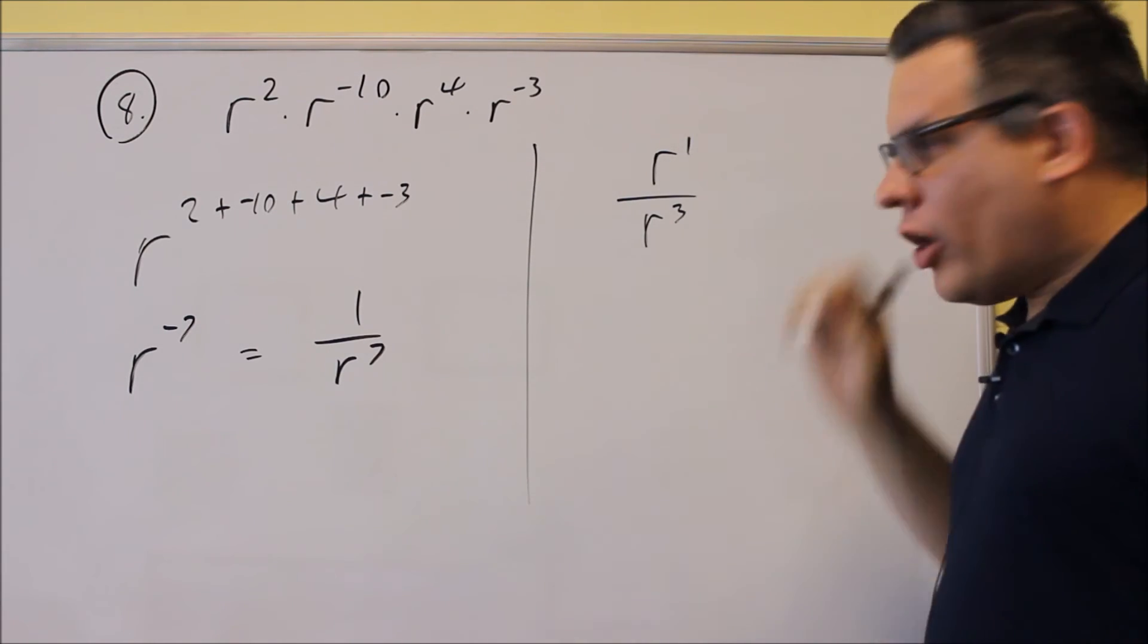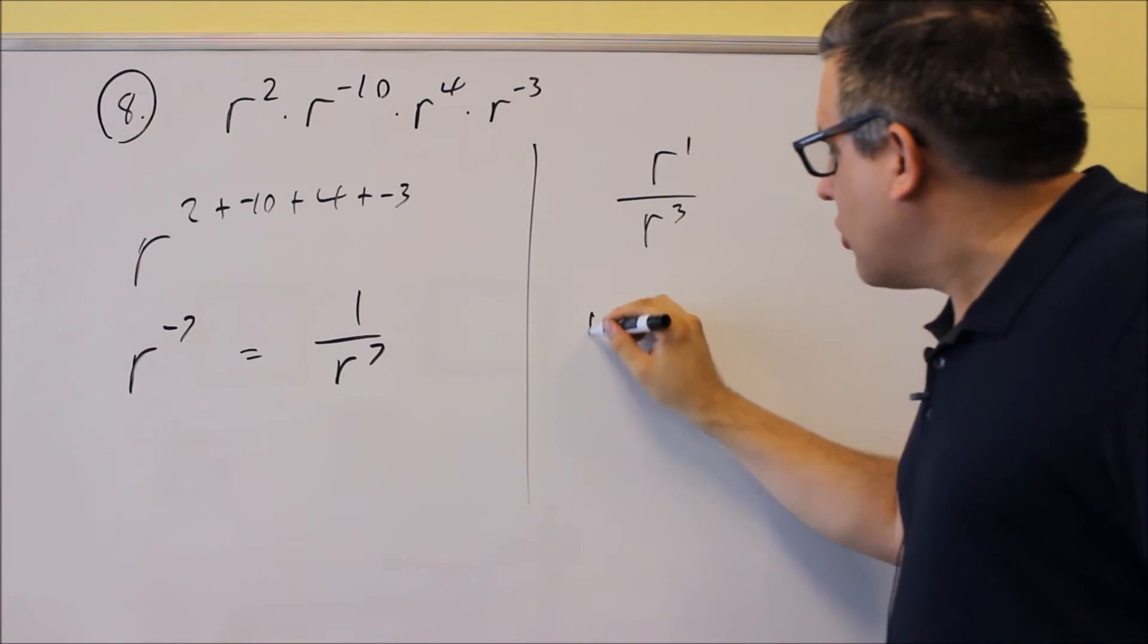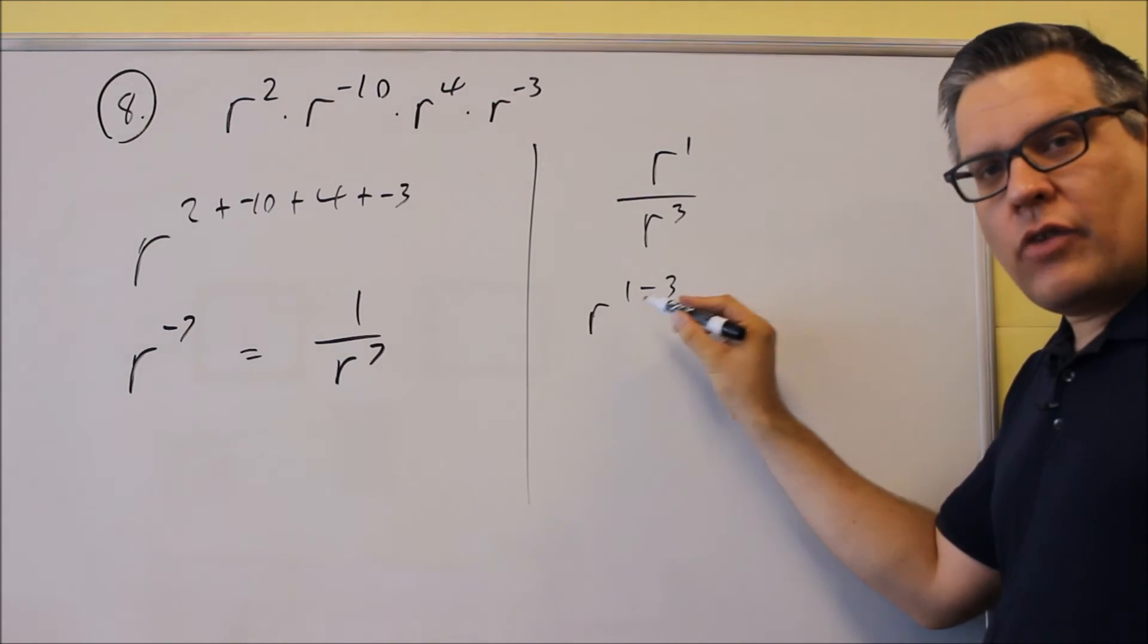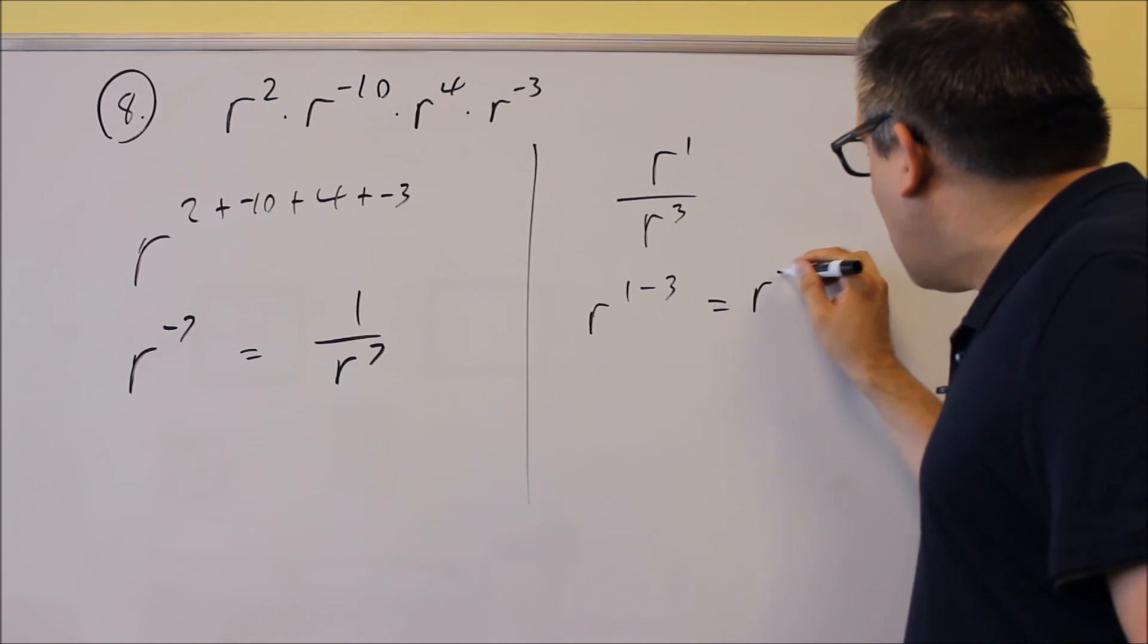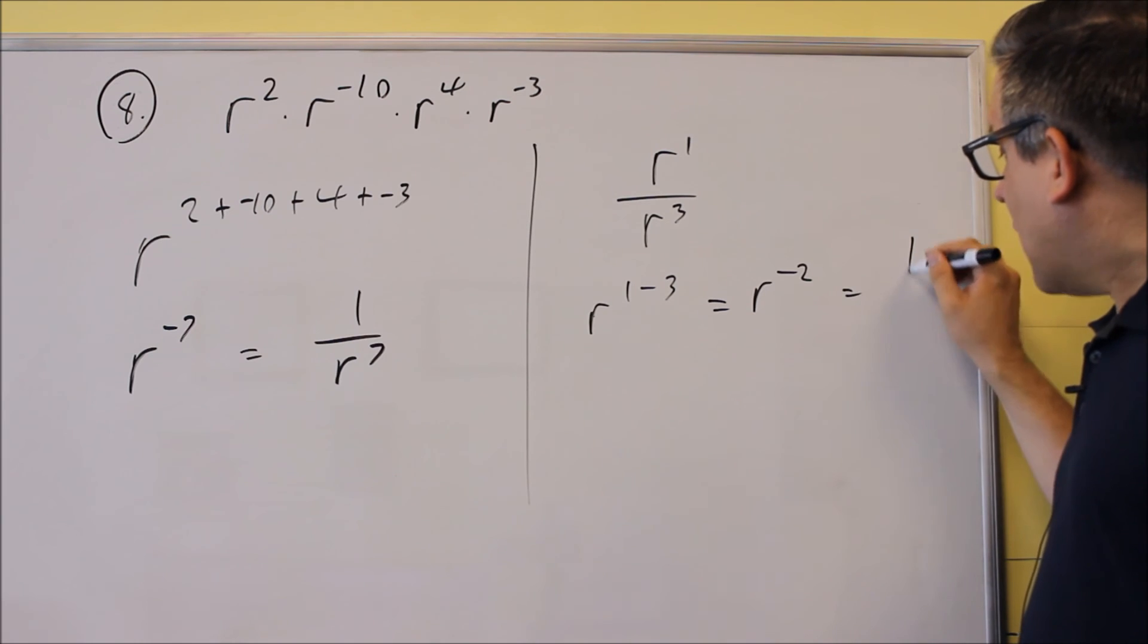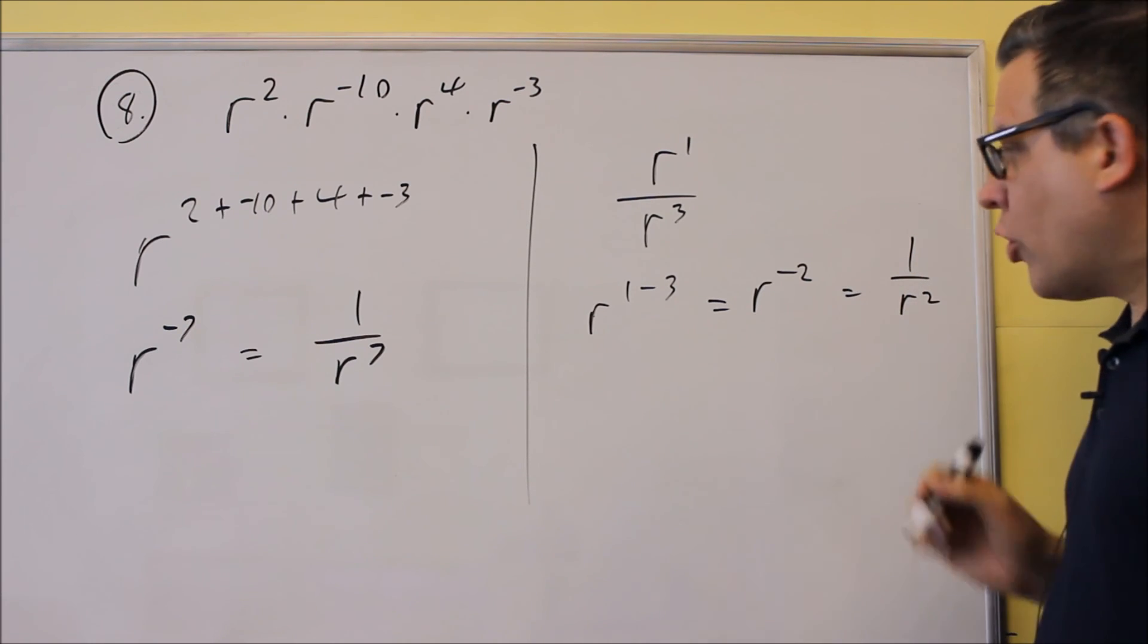So if I want to subtract these, I have the top one minus the bottom one. So that's a 1. So I have 1 minus 3. That's r to the negative 2. And once again, if I want to write that as a positive exponent, I would write it like this, 1 over r squared.